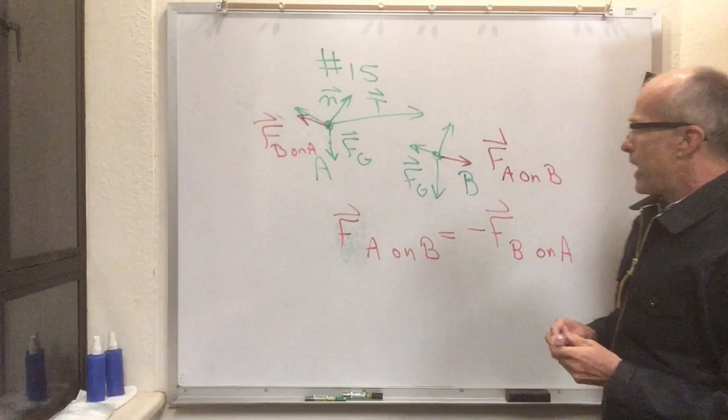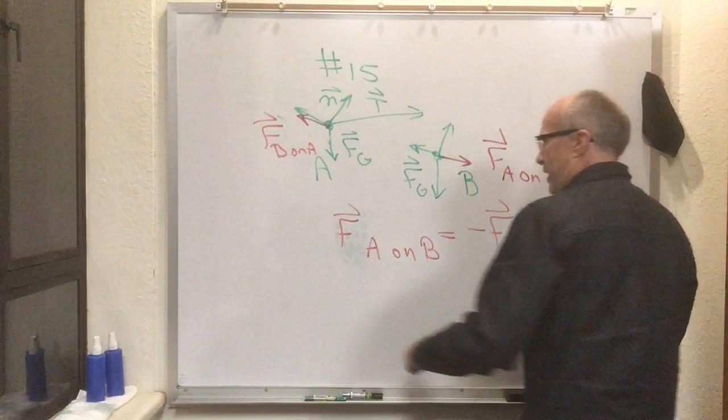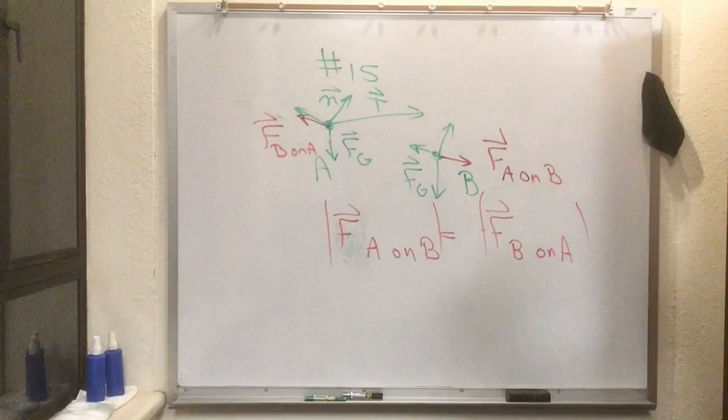Now, what does this say? It says that one thing is that the magnitude of these two forces is the same, because if I have a vector equation, I can always take the magnitude of both sides. This minus sign doesn't matter when I'm taking the length of a vector.